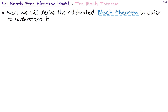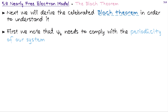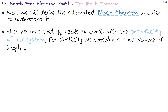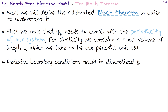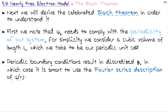What we will do first is note that ψ_k, our eigenfunction, needs to be lattice-periodic, so the periodicity of our system needs to be somehow imprinted in ψ_k. For simplicity, we consider the simplest periodic system: a cubic volume with length L as our periodic unit cell. Of course we could generalize this to more arbitrary-looking periodic structures. Since we have a periodic system, we also have periodic boundary conditions, which will discretize k, as always happens with periodic boundary conditions.